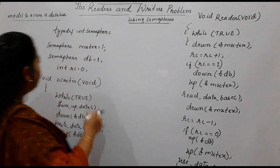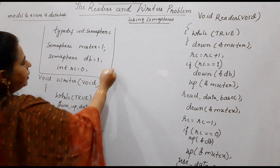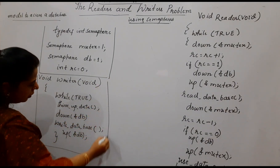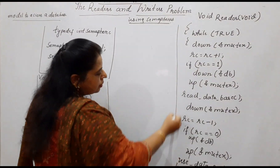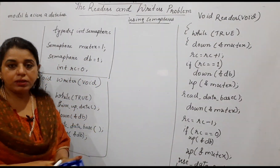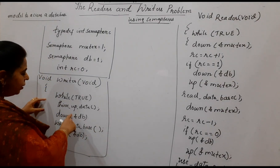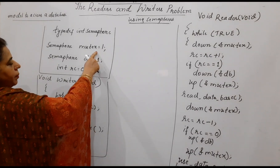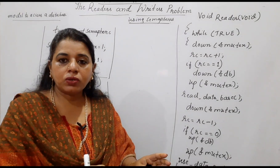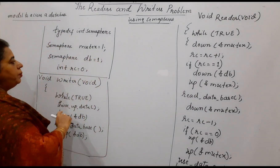The code is written over here. The declaration part is here, the writer code is here, and the reader code is written over here. Now let us see line by line the pseudocode for these processes. We have the reader process and the writer process. We are making use of the mutex semaphore, which is going to provide mutual exclusion — that is, exclusive access to the critical section, exclusively access to the database. For that reason, we require the mutex.